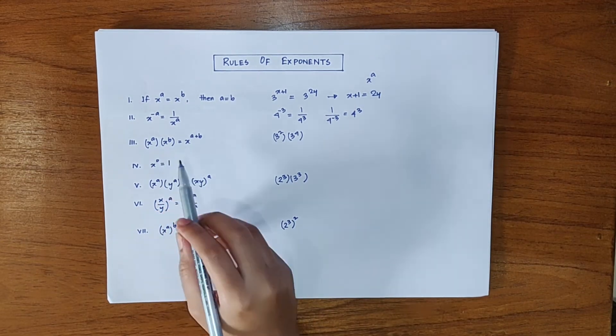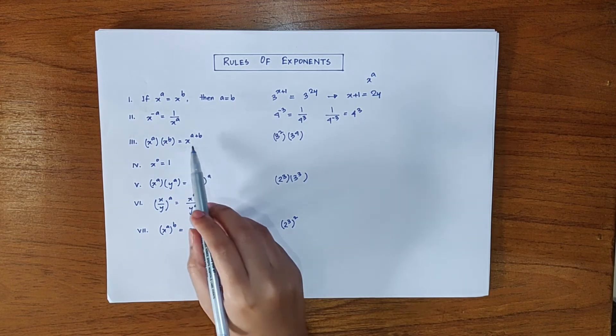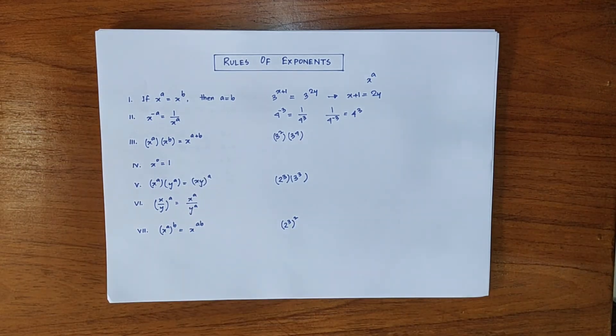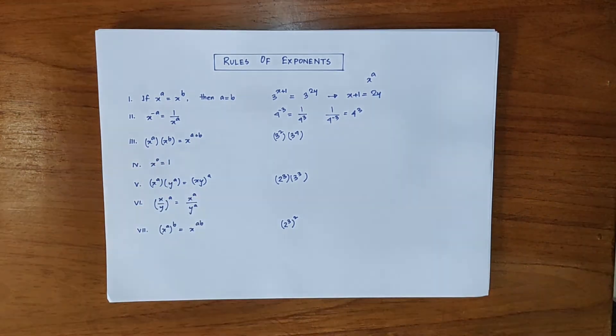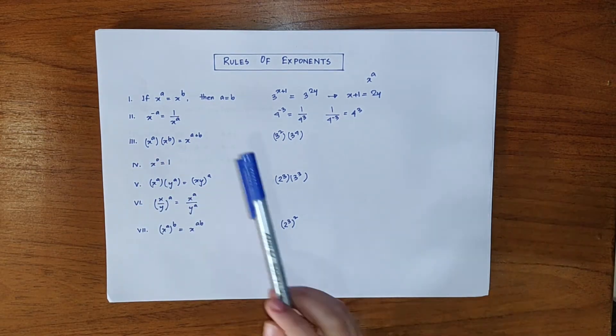If x to the power a into x to the power b is equal to x to the power a plus b. Now if two exponents with the same base are multiplied together then their powers are added.